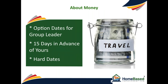Since you will be under contract for the group space that you are marketing, you should always set option and payment dates 10 to 15 days in advance of their actual due date. More than one agency has been stuck by having the payment dates the same as the contract date with the supplier.